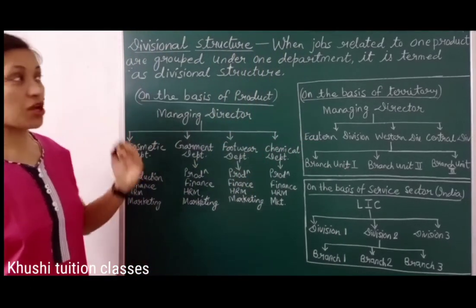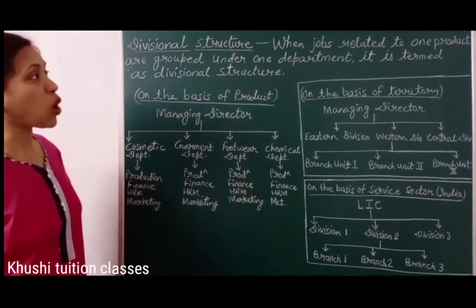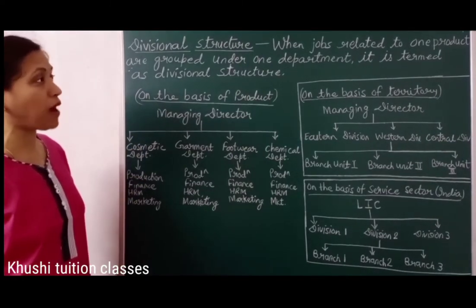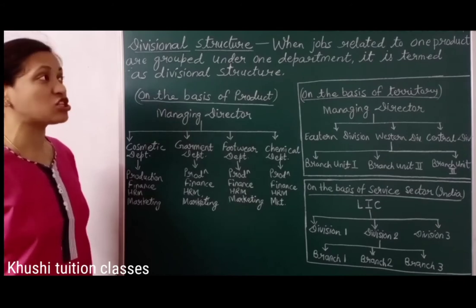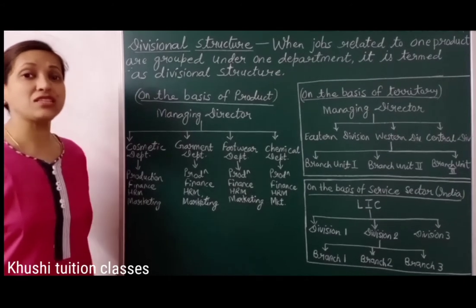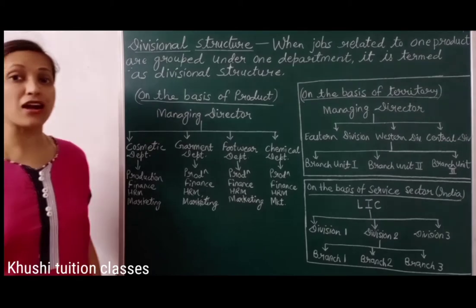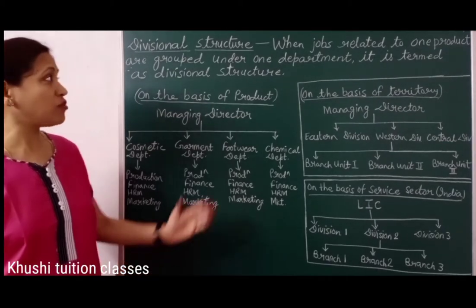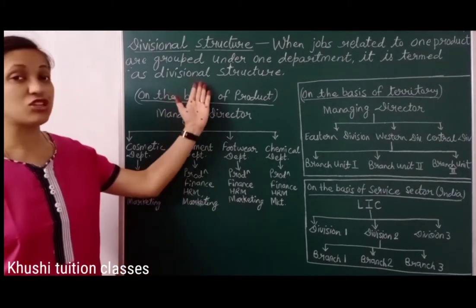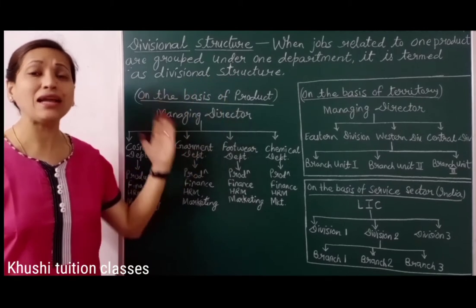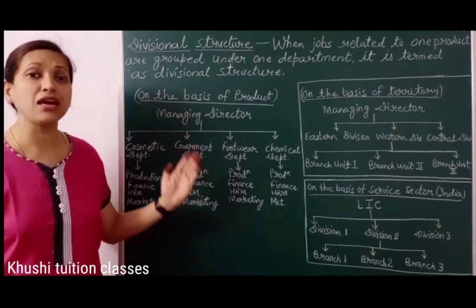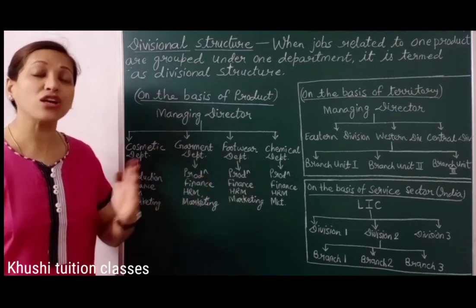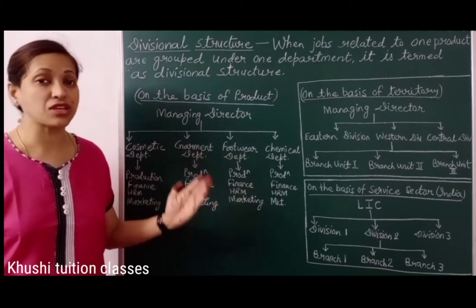What is this divisional structure? When jobs related to one product are grouped under one department, it is termed as divisional structure. When the organization department is on product basis, we call it divisional structure. In multinational organizations, we see divisional structure — where a lot of products or services are provided.